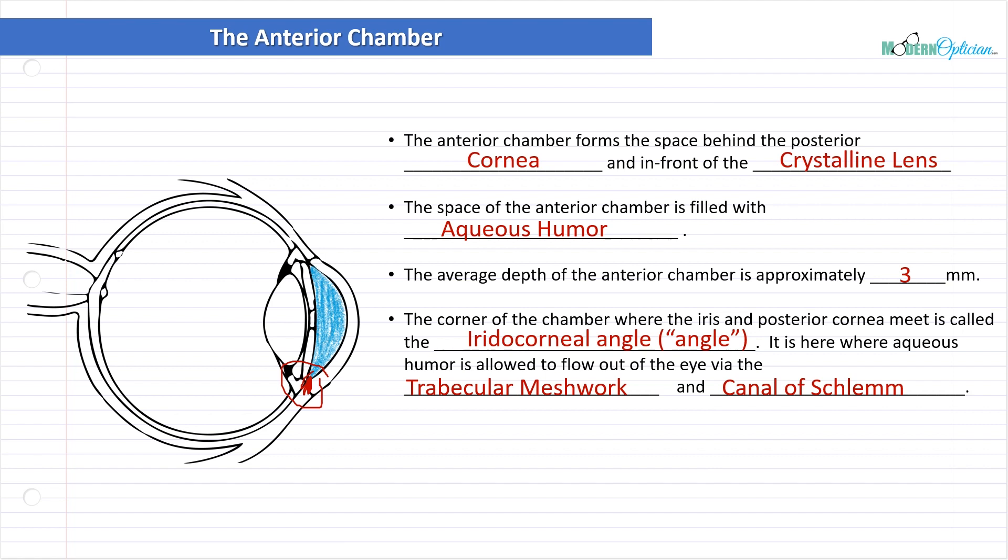This is extremely important. Aqueous humor is not a stagnant fluid. It's constantly produced and has to be drained. It's a constant production-drainage relationship that helps maintain intraocular pressure. And that's the area where it drains. This is where things can go wrong in the drainage for a couple different reasons.